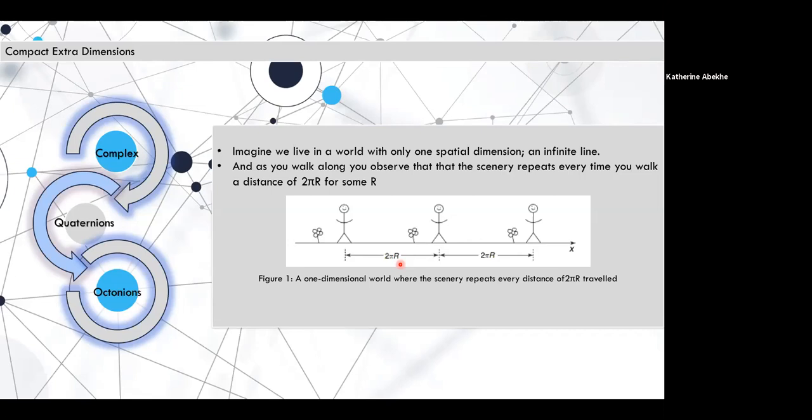So if you can see ahead, you will observe clones of Luffy repeating down the line at distances of 2πR, 4πR, 6πR, and so on. And if you look up the line, you'd see the same thing as well.